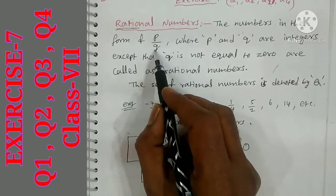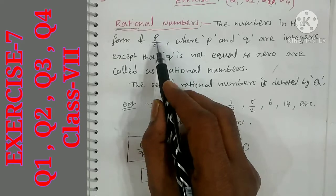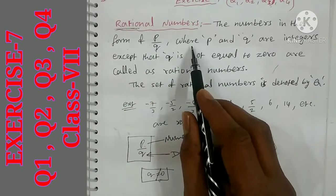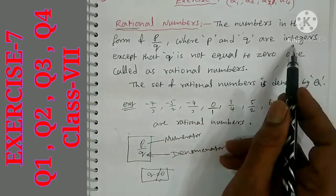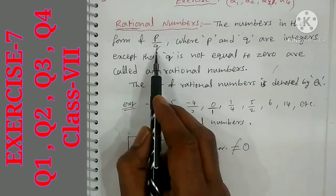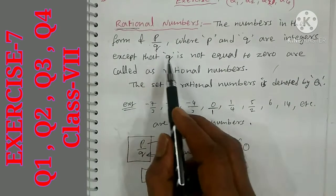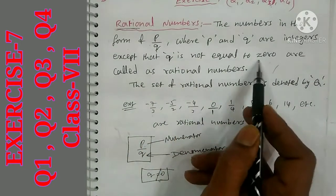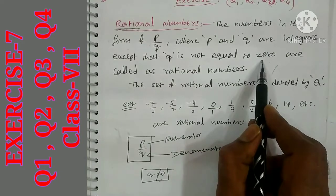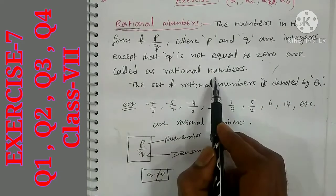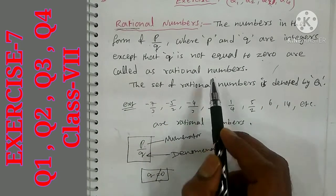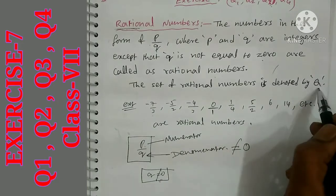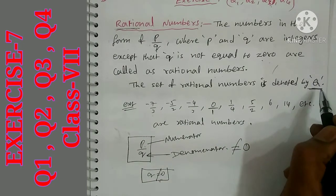The number should be in the ratio form — that is called a rational number — but with one condition: P and Q are integers. Q must not be equal to 0. Numbers where Q is not equal to 0 are called rational numbers. The set of rational numbers is denoted by Q, capital letter.